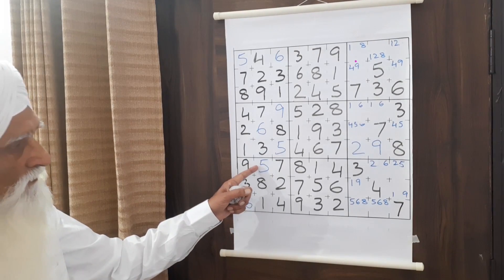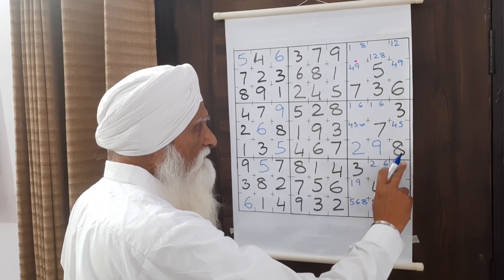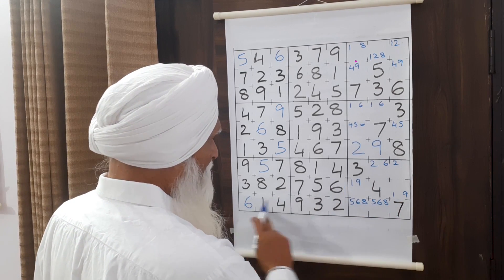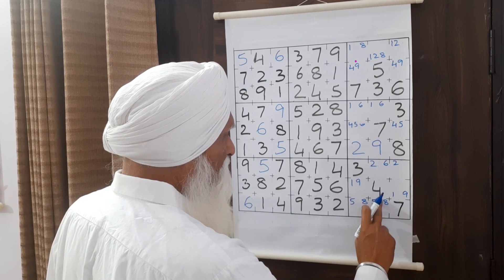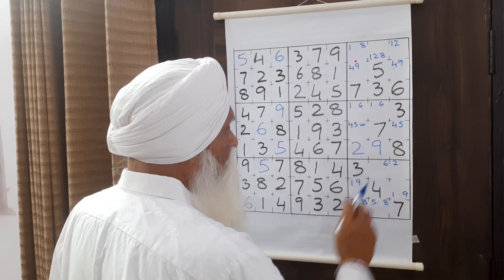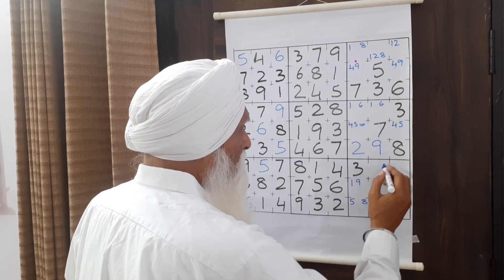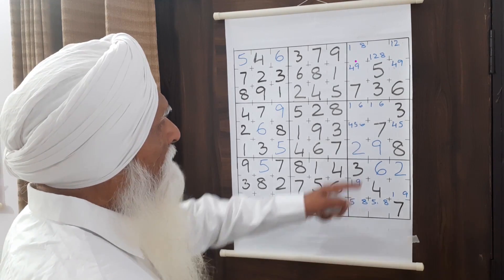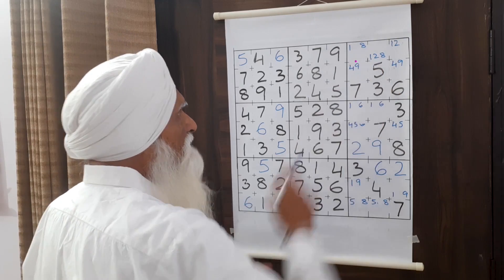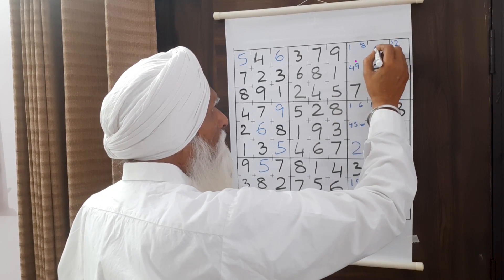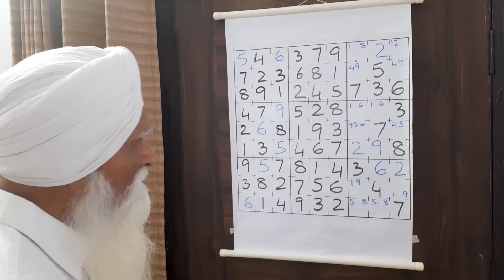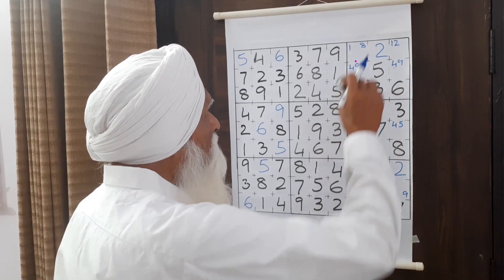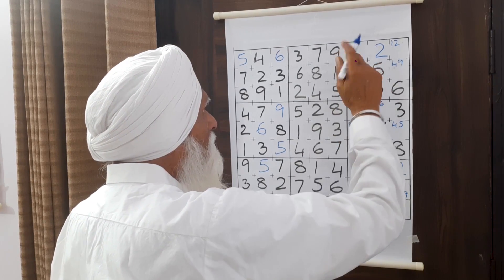With six determined, we cannot have six here, here, or here — we eliminate six from those cells and place six in the correct position. We then get six in multiple cells resolved, and two in another cell. Going further, we place two here, two here, two will come in the center. Then two here leads to eight here; eight cannot go in a certain cell so we remove eight from there, and eight will come in its correct position.